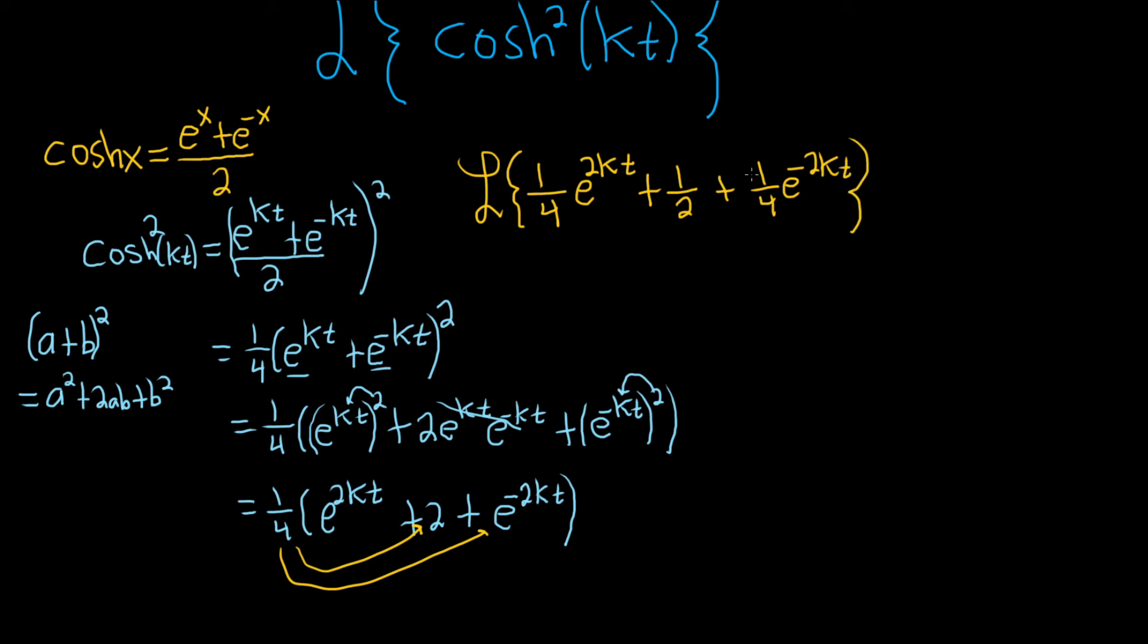All right, and then the Laplace transform is linear, so we can just take the Laplace of each piece. So you can pull out the one-fourth, Laplace e to the 2kt, plus one-half. You can pull out the one-half and just write it as the Laplace of one. Then pull out the one-fourth here at the end, so one-fourth, Laplace, e to the negative 2kt.